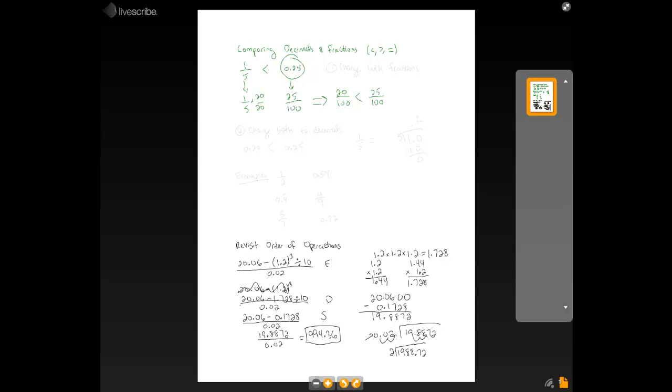Yeah. So, it turns out that 0.25 was bigger than 1 fifth. So, that's, we can work with them as fractions. So, one way is to change them both to fractions. When you do that, remember, you need the same denominator to compare them. Otherwise, you can't compare them effectively.